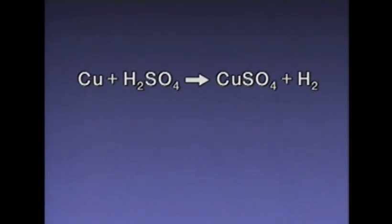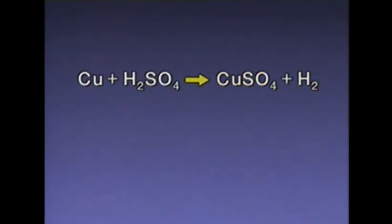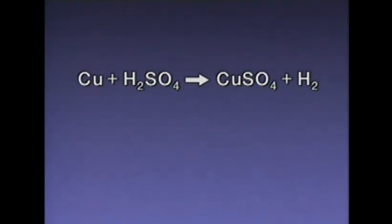This equation represents the chemical reaction between copper and sulfuric acid. In this or any other chemical equation, the starting materials or reactants and the products are separated by a yield sign. This arrow is the yield sign — it indicates that a reaction is taking place. The arrow points toward the products of the reaction. The chemical symbols for elements are used in equations because it's quicker and easier to write the symbols than it is to write out the names of the elements.